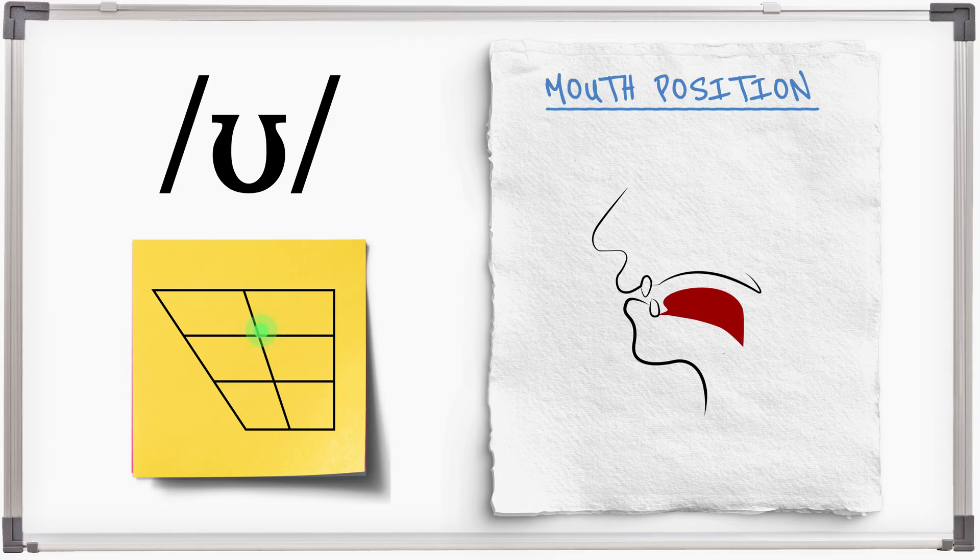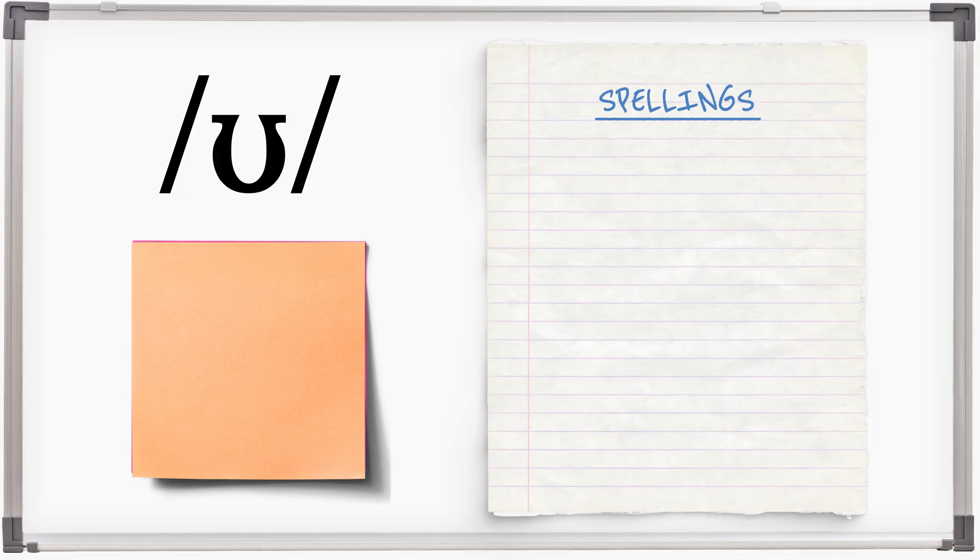The sound is slightly further back when dark L follows it. U. The lips can be slightly rounded, U, but it is more commonly unrounded. U. U is spelt with U's and O's.